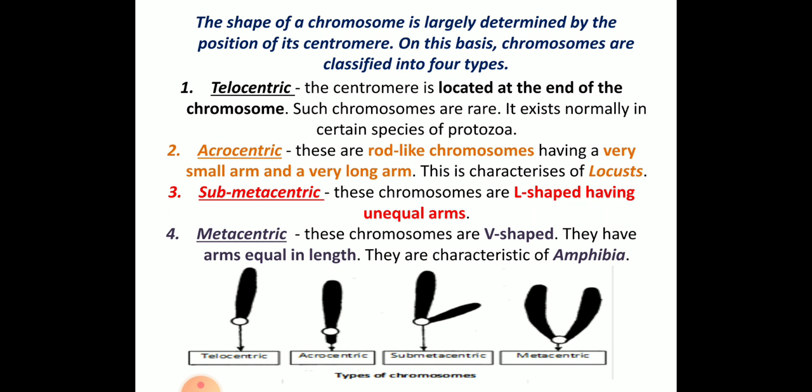Acrocentric chromosomes are rod-like chromosomes having a very small arm and a very long arm. The P arm and Q arm can be easily distinguished by having a very much smaller arm and a larger one. This characteristic can be seen in locus, that is, in insects.